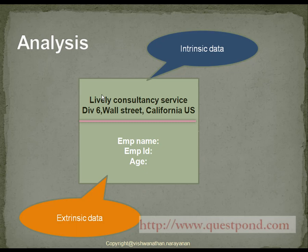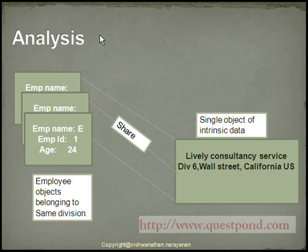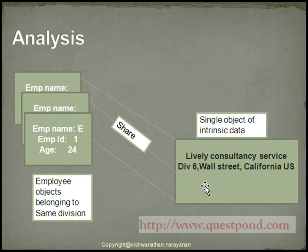The top part of the iCard which remains the same for all employees belonging to the same division is known as intrinsic data. While the lower part of the iCard which changes from employee to employee is known as extrinsic data. Thus all the employee objects belonging to the same division will share a single object of intrinsic data, creating only one object and making all objects share the same. This ensures increased performance as well as reduction in memory consumption.